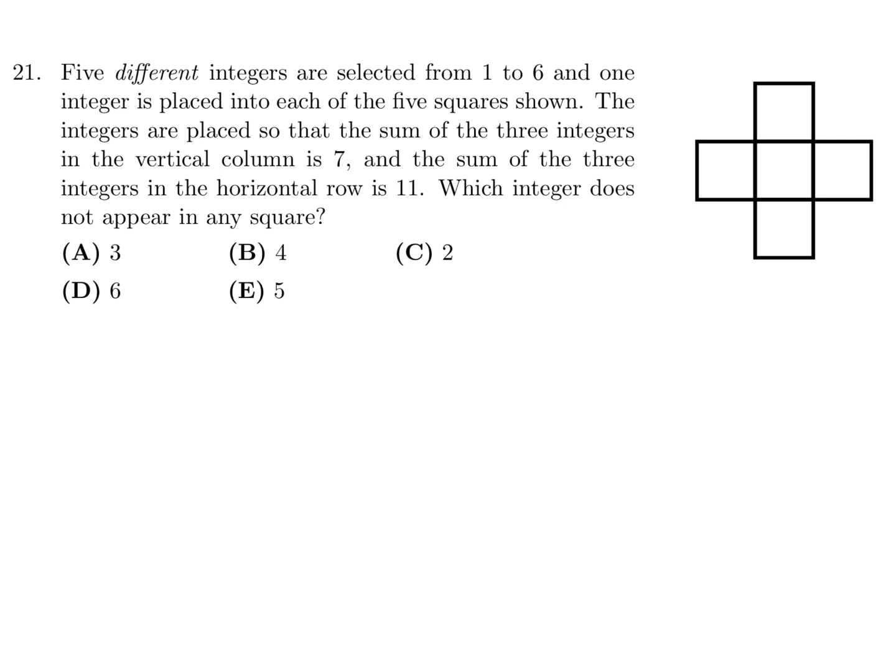Five different integers are selected from 1 to 6, and one integer is placed into each of the five squares shown. The integers are placed so that the sum of the three integers in the vertical column is 7, and the sum of the three integers in the horizontal row is 11. Which integer does not appear in any square?